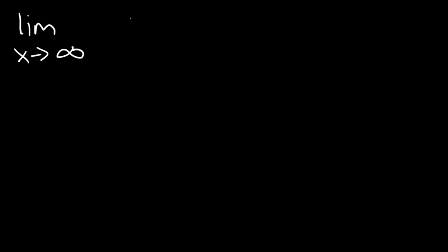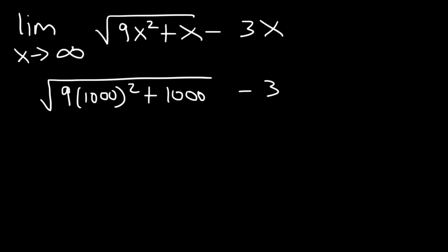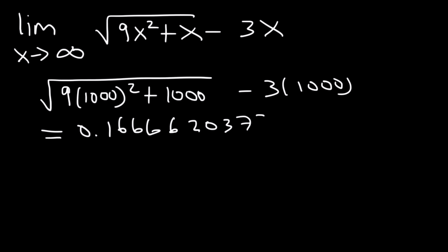What is the limit as x approaches infinity of the square root of 9x squared plus x minus 3x? If you're not sure what to do, use direct substitution — plug in a very large number like 1,000. So we have the square root of 9 times 1,000 squared plus 1,000 minus 3 times 1,000. If you type this in, you should get approximately 0.16666, which is basically 1 over 6, or 0.16 repeating. So 1 over 6 is the exact answer.